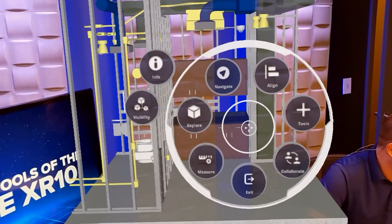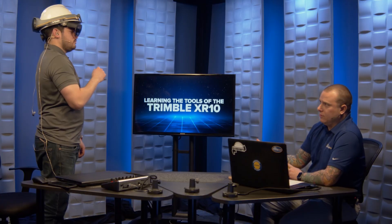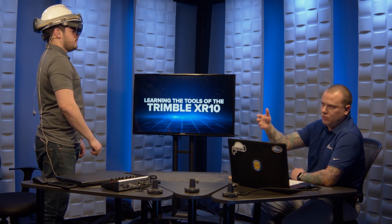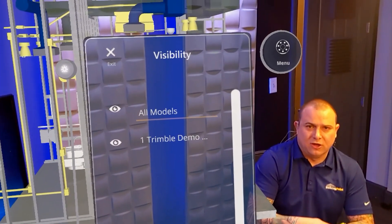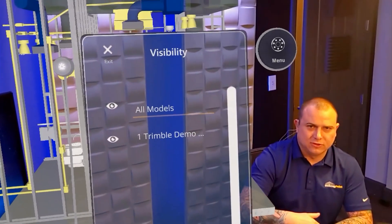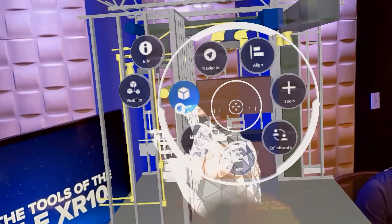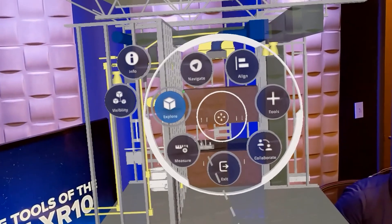Next is Explorer. Typically in this scenario we only have one model open, but you can have multiple models open within your XR10 within Trimble Connect for HoloLens. Explorer is where you would see those multiple models. You can go ahead and turn things off and on — so if you have structural models and MEP models, you can turn some on and turn some off to focus in on something specific. It's kind of like layering. Explorer also provides some basic model info.